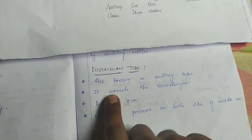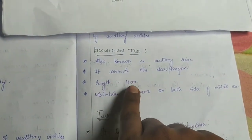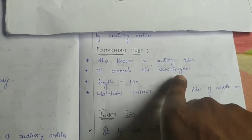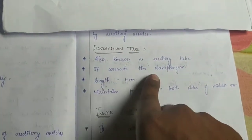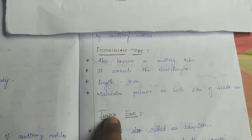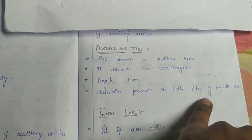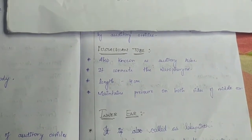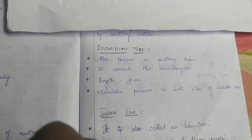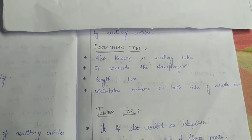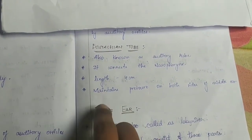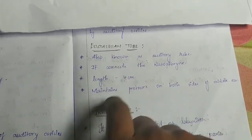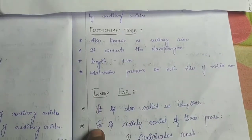The next part is the Eustachian tube, also called the auditory tube. It connects to the nasopharynx in the upper part. Its length is 4 cm. It helps to maintain equal pressure on both sides of the middle ear.